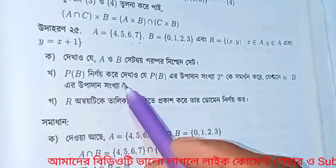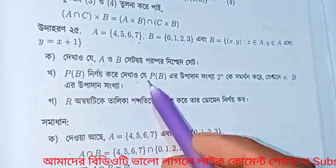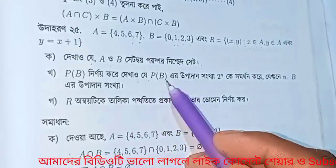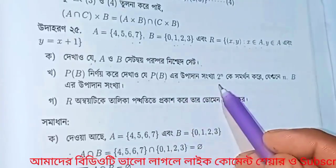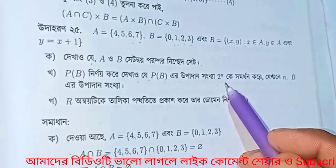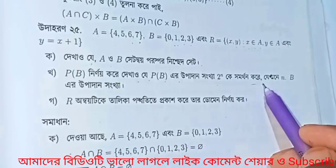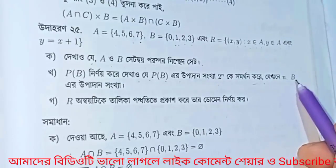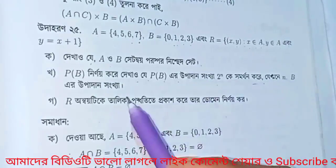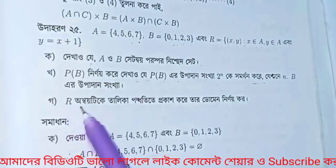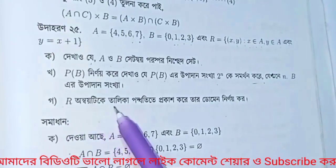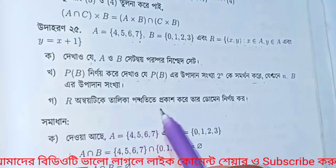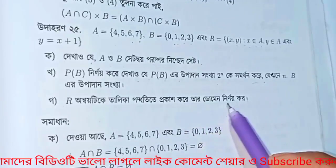Ghonambar P of B ninfoi kore dekhaoj. P of B r opaid aan sankha tudidi por n ke somorthon kore. Jakhad n, B r opaid aan sankha. Ghonambar R unmoytike talikya podyutit e prakas kore tar domain ninfoi kore.